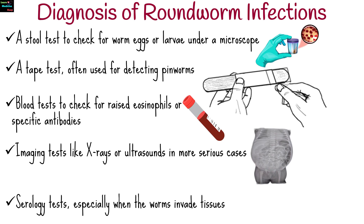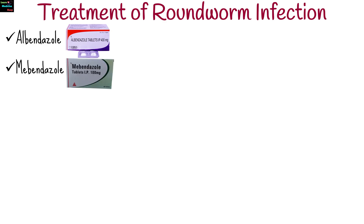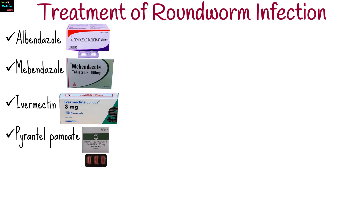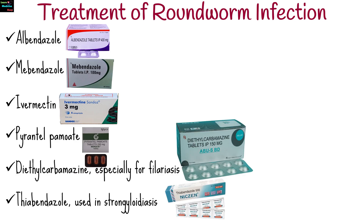The good news is roundworm infections are usually treatable with medications known as anthelmintics. Some of the commonly used medicines include albendazole, mebendazole, ivermectin, pyrantel pamoate, diethylcarbamazine — especially for filariasis — and thiabendazole, used in strongyloidiasis. The type and duration of treatment will depend on the specific worm and the severity of the infection.